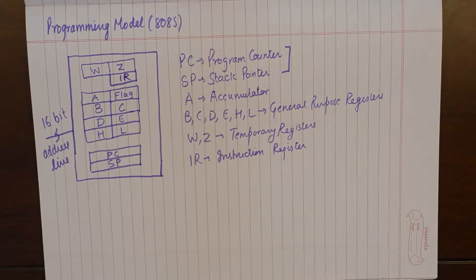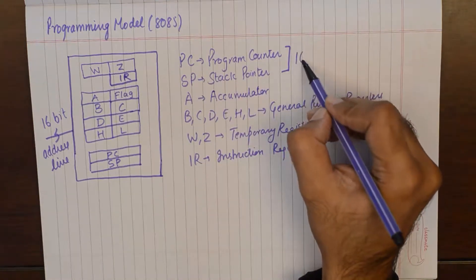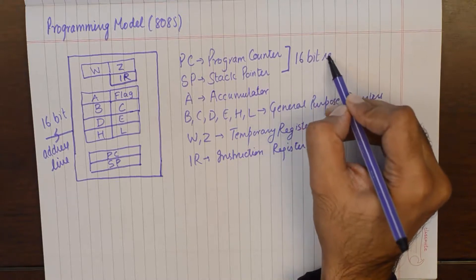And of course the memory location which Program Counter is pointing is a 16 bit address. So it has to have the ability to store 16 bits in order to point to that 16 bit address. So that is why the Program Counter and Stack Pointer are 16 bit registers.